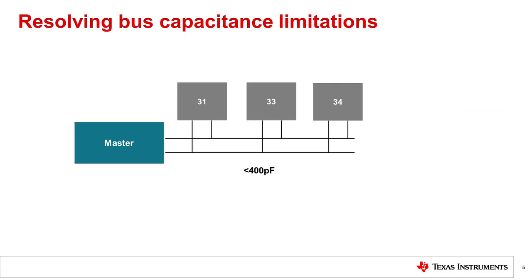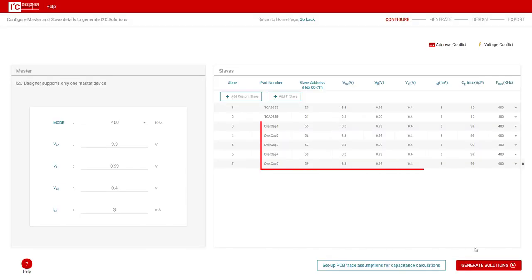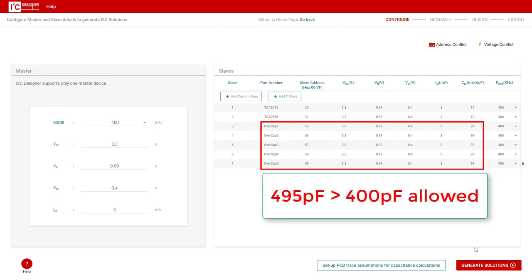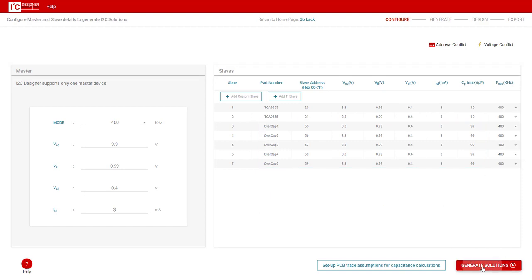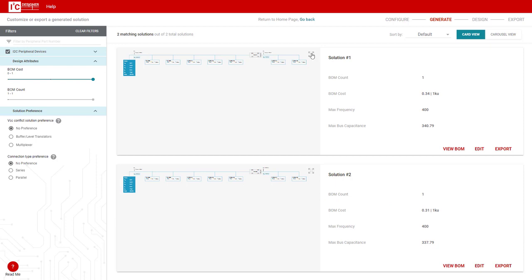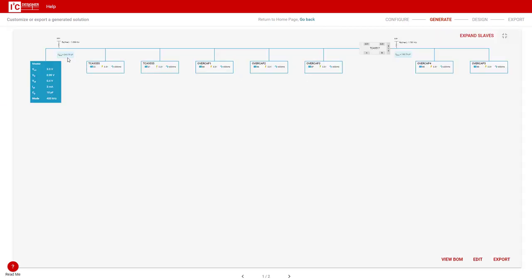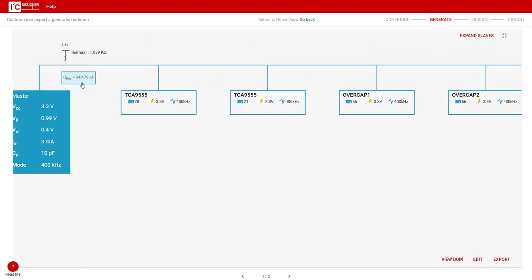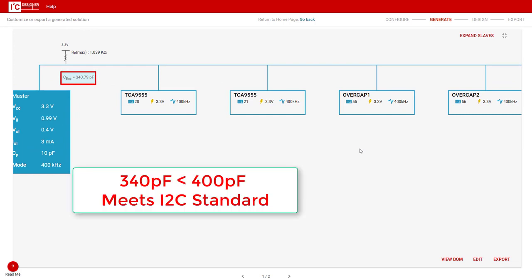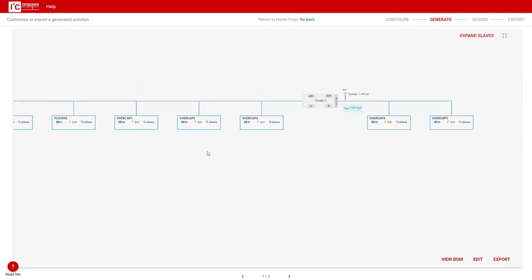Bus capacitance is a common issue with largely loaded I2C buses, where the I2C spec states the bus capacitance must be less than 400 pF for standard mode and fast mode. The I2C Designer tool has a built-in capacitance estimator feature which is based on PCB parasitics. When the capacitance value surpasses the 400 pF limit, the tool will suggest I2C buffers to segment the capacitance to comply with the I2C standard.